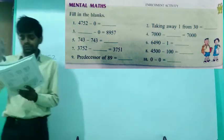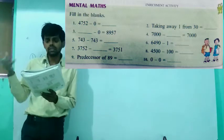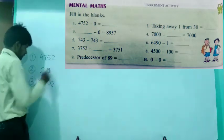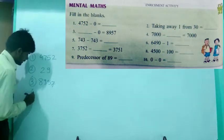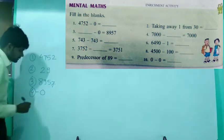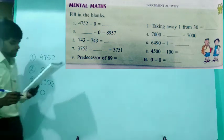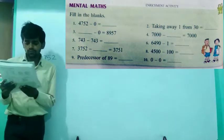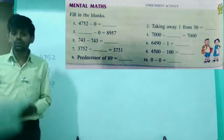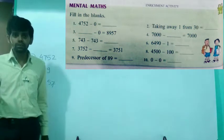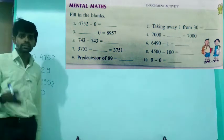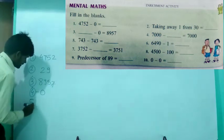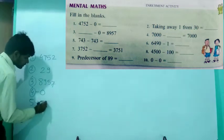Look at the fourth one: 7000 minus something equals 7000. The answer is 0 — so the fourth answer is 0. Next, the fifth question: 743 minus 743. We learned that when a number is subtracted from itself, the difference is always 0. So the fifth answer is also 0.